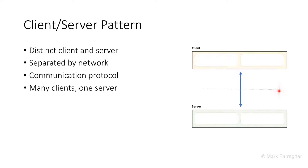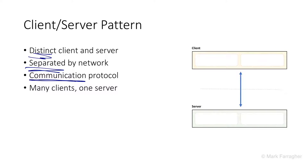Between the client and the server is a barrier. I've drawn it as a dotted line to highlight that the client lives on one system and the server lives on another. So these two layers are deployed on separate systems connected by a network, and there is a formal communication between these layers. We have distinct clients and servers separated by a network, a formal communication protocol that connects them, and usually a single server.